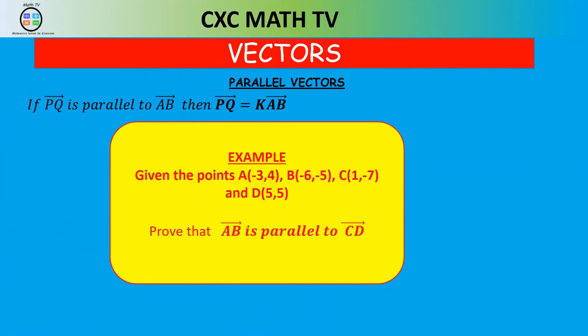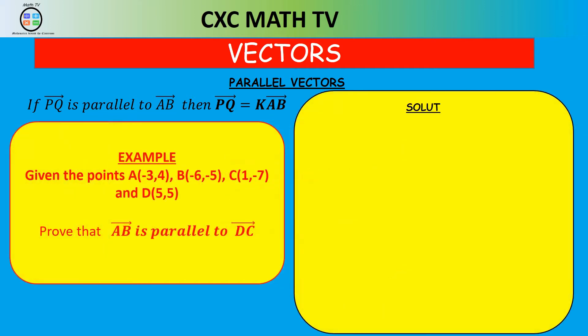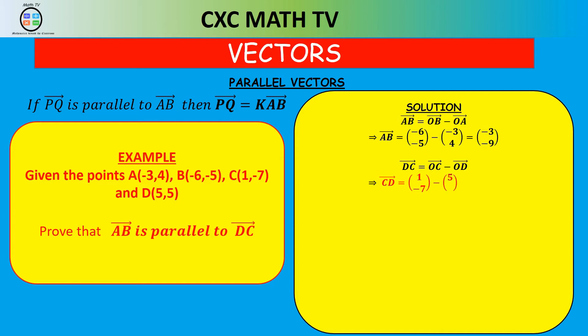Given points A(−3, 4), B(−6, −5), C(1, −7) and D(5, 5), prove that vector AB is parallel to vector CD. Vector AB = OB − OA = (−6, −5) − (−3, 4) = (−3, −9). Vector CD = OC − OD = (1, −7) − (5, 5) = (−4, −12).